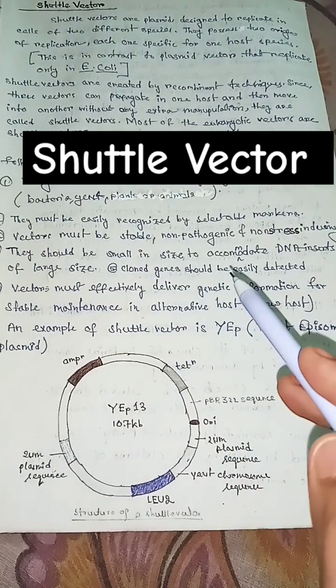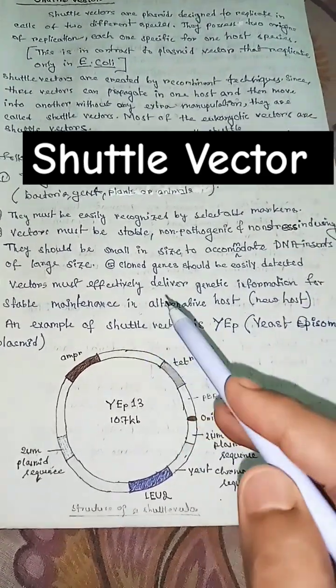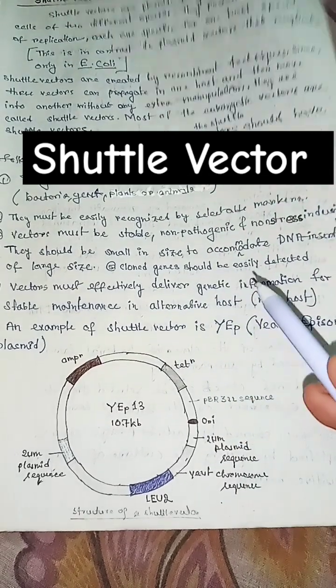They should be small in size to accommodate DNA inserts of large size. Cloned genes should be easily detected.